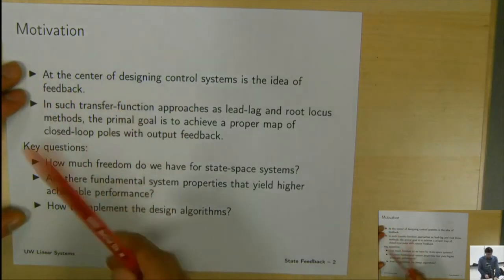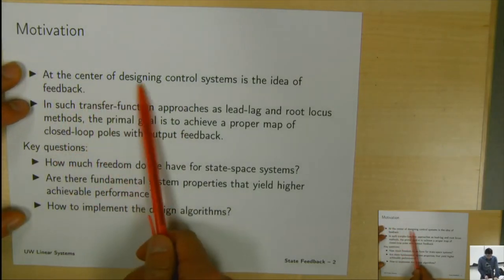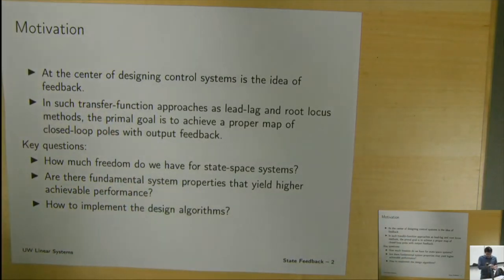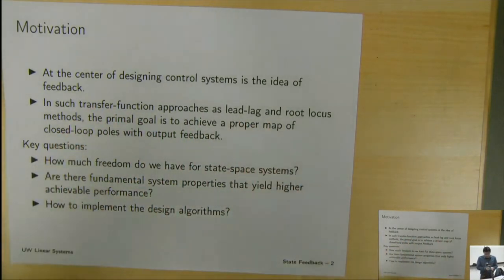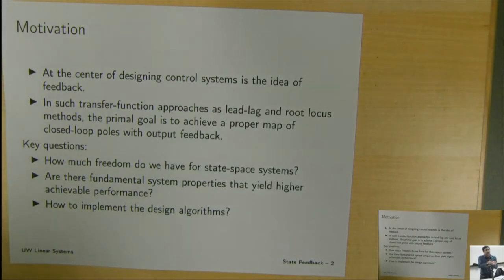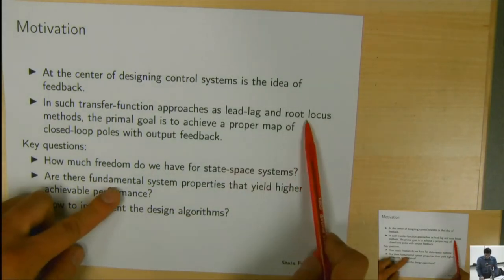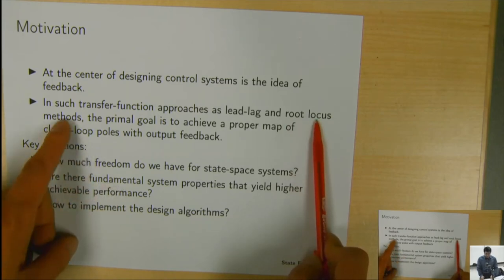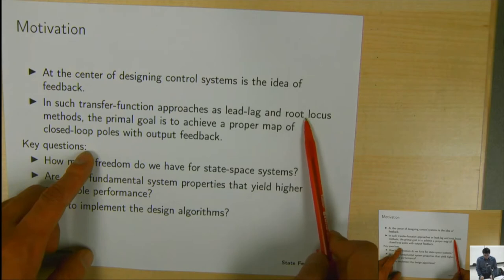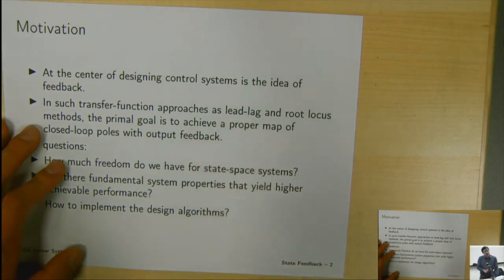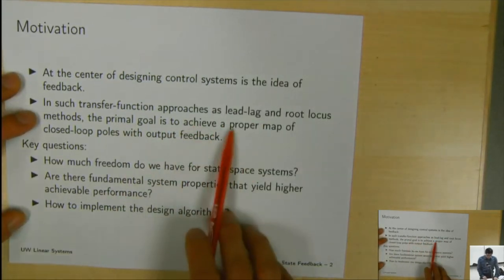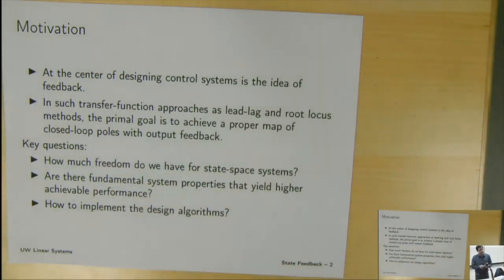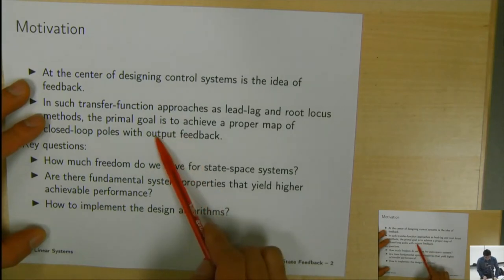We've talked about some of the motivations already, and the concept of feedback, which is essential — this is closing the loop for control system design. In transfer function approaches, whether PID, lead-lag, or root locus, the core is about placing the closed-loop poles. The primary goal is to achieve a proper placement of the closed-loop poles with output feedback, using measurement of the output to design the control.